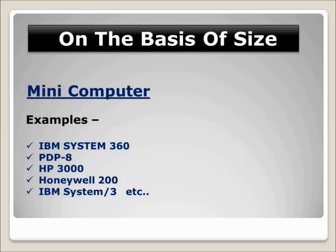Minicomputers are fast compared to microcomputers. They can have more than one CPU and are more expensive than microcomputers. They are used in banking, business transaction processing, and scientific and engineering work. Minicomputers are also called mid-range servers.